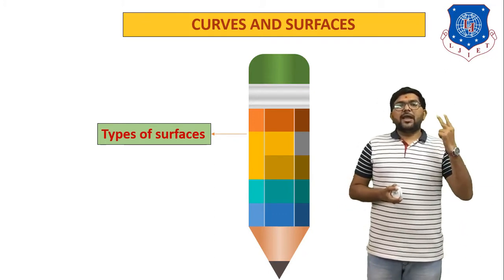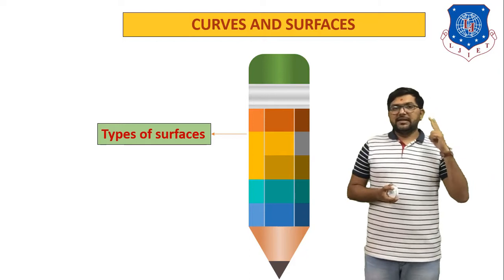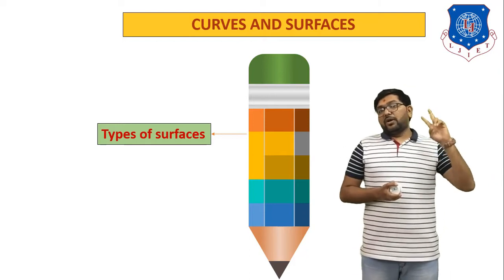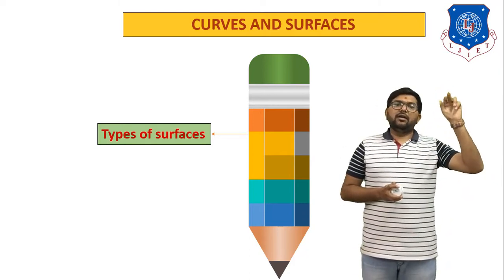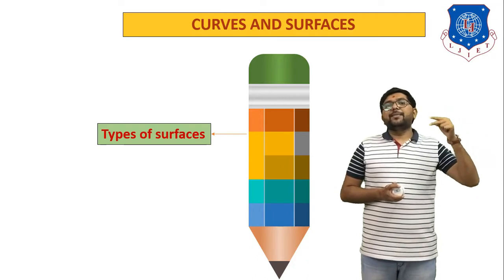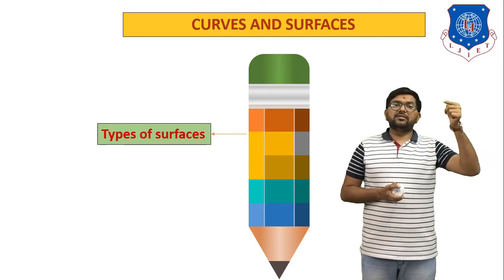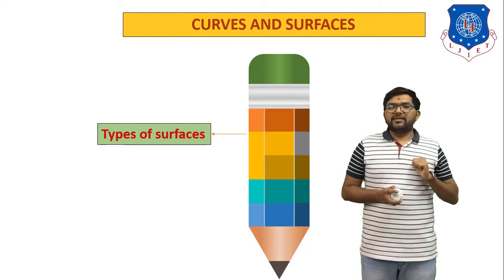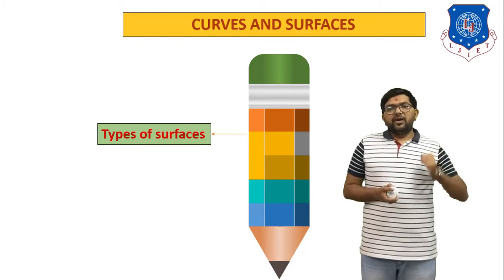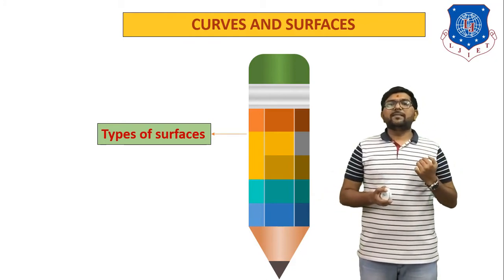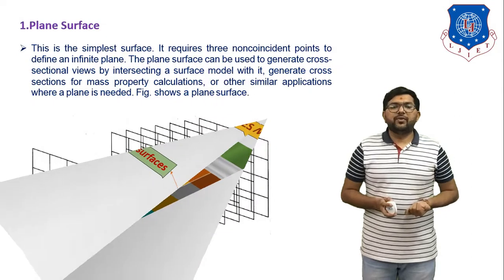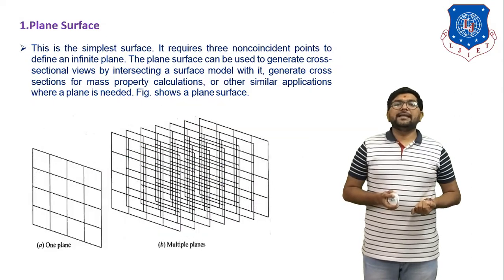There are two types of surfaces, just like two types of curves. We have two types of curves: analytical and synthetic. Similarly, we have two types of surfaces: analytical surfaces and synthetic surfaces. In today's session we will discuss some types of surfaces. The first one is the plane surface.